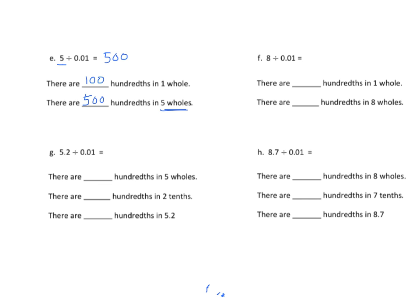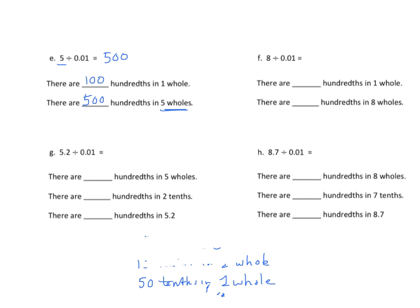I didn't pull any examples with tenths, but I'm going to draw one up. Suppose we have five divided by one-tenth. How many tenths are there in one whole? There are ten tenths in one whole. If each unit has ten, and we have five units, that gives us fifty tenths. So five divided by one-tenth is fifty.